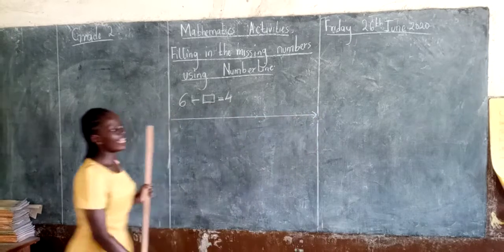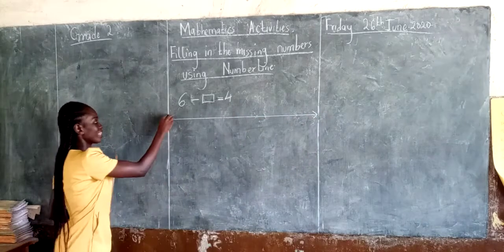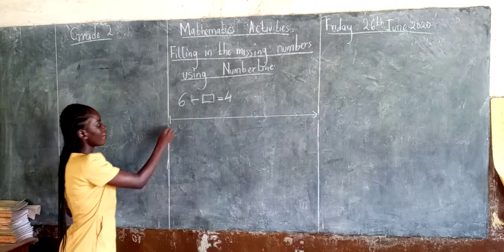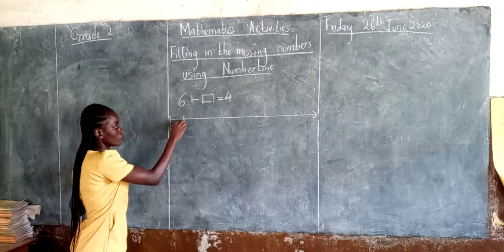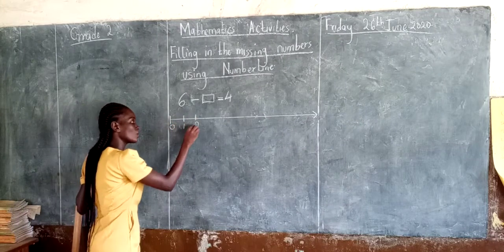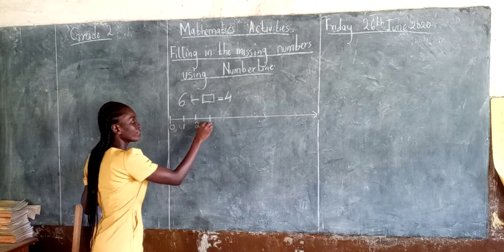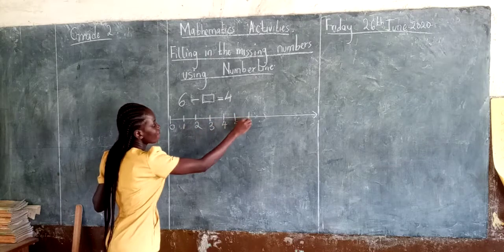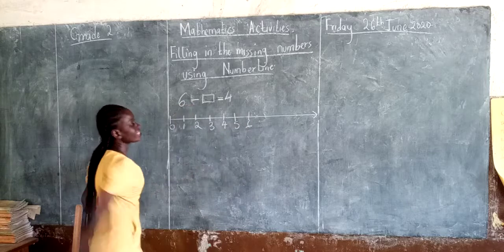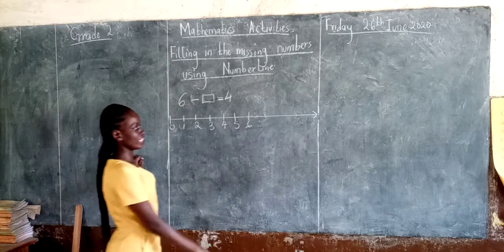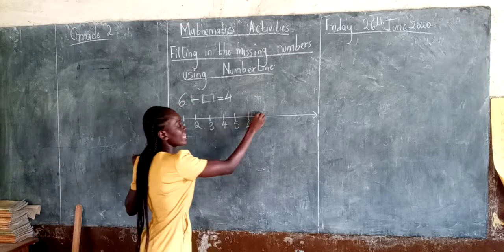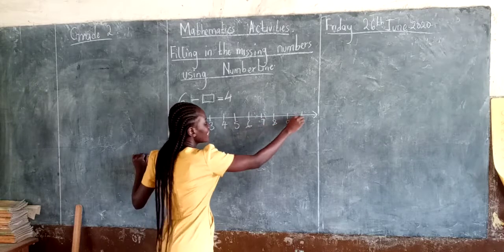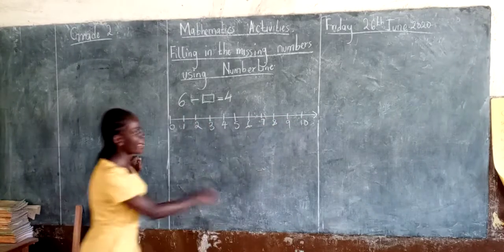We draw our number line and count together: zero, one, two, three, four, five, six. Six is our biggest number, but you can continue — seven, eight, nine, ten. Let's stop there.